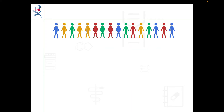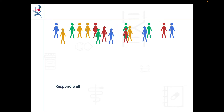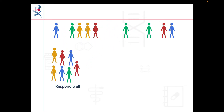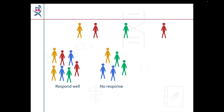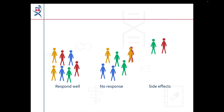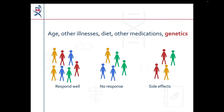Let's say we have a group of people with the same medical condition who are all being treated with the same medicine. As you'd expect, some people will respond well to treatment and get better. However, other people might not see any effects of the medicine, while others might have side effects. There are many reasons why people respond differently to the same drug, like age, other medicines that the person might be taking, or their genetics.